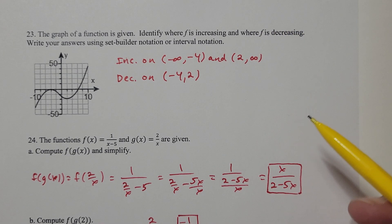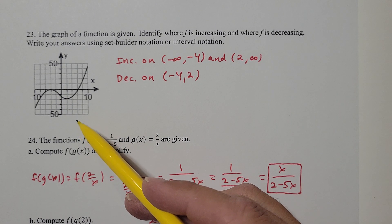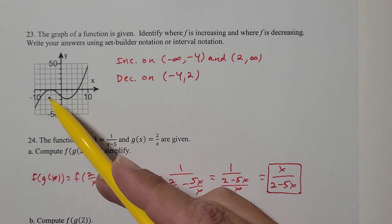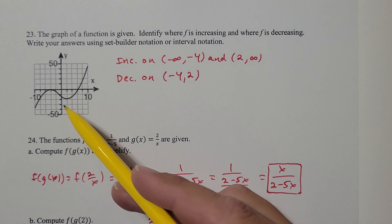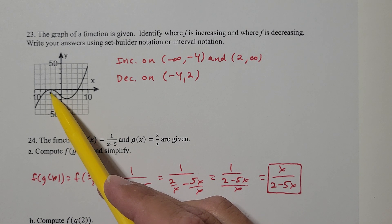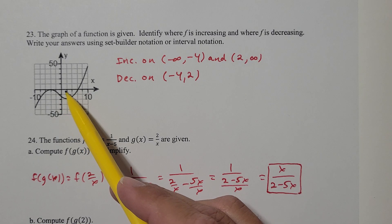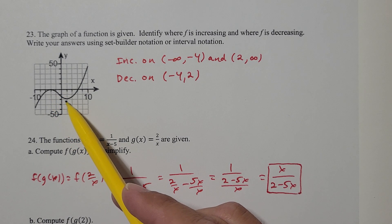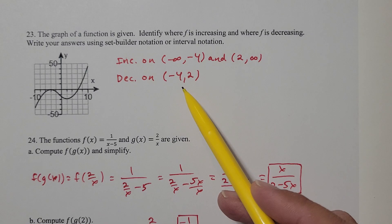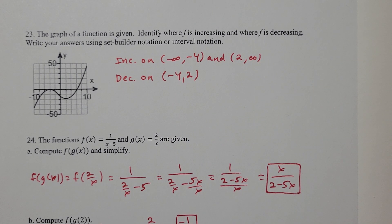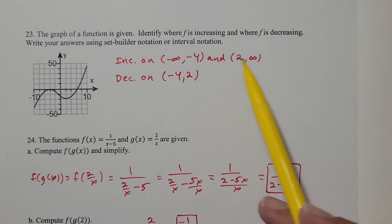Where f is decreasing means where the curve is falling as we scan left to right. Between x = -4 and x = 2 the curve is falling, so f is decreasing on (-4, 2). Whenever you give intervals for increasing or decreasing, they're always open intervals — use parentheses everywhere, no brackets.